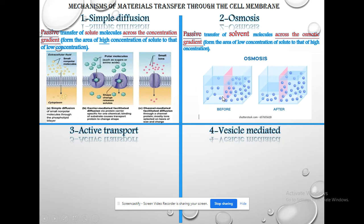Before osmosis, water levels were equal on both sides, but as a result of osmotic pressure imbalance between the two sides, water movement occurs. The solute here cannot cross the membrane, so diffusion does not occur — instead, osmosis takes place. Water will move from the side with less solute toward the side with more solute. After osmosis, the water level drops on the side with less solute and rises on the side with more solute.